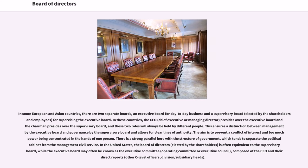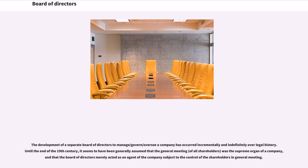In the United States, the board of directors, elected by the shareholders, is often equivalent to the supervisory board, while the executive board may often be known as the executive committee, operating committee or executive council, composed of the CEO and their direct reports, other CEO-level officers, and division or subsidiary heads. The development of a separate board of directors to manage, govern, and oversee a company has occurred incrementally and indefinitely over legal history.